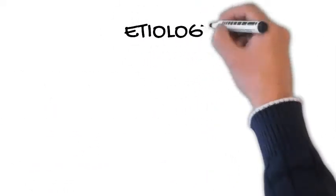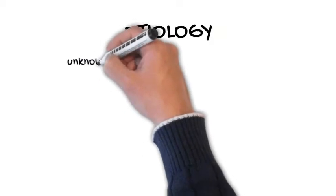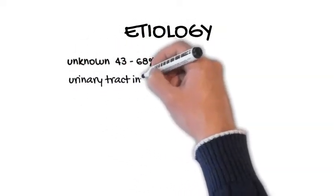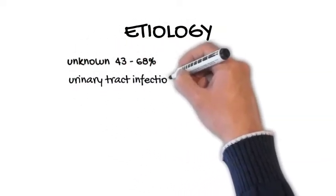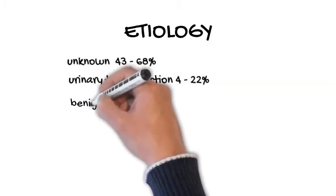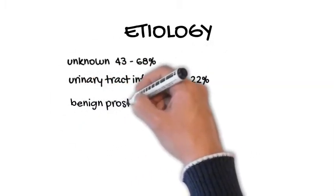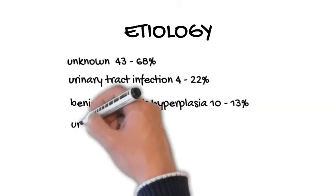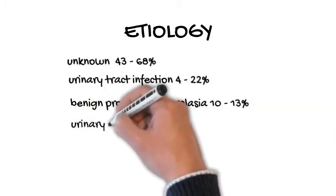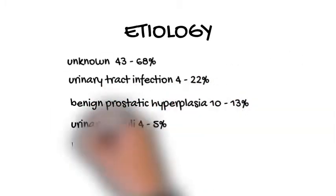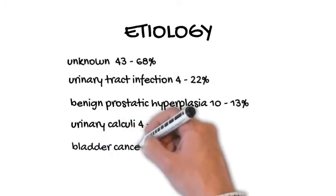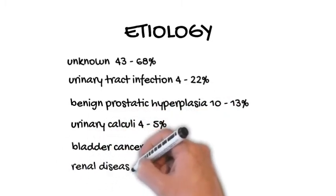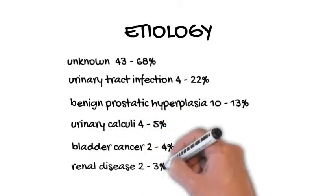In many patients with microscopic hematuria, a specific cause or pathology is not found. In the small percentage of patients for whom an etiology is identified, causes may include urinary tract infection, benign prostatic hyperplasia, medical renal disease, urinary calculi, urethral stricture disease, and urologic malignancy.